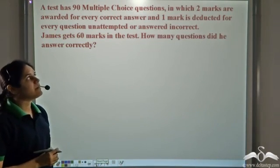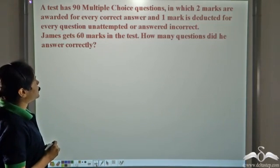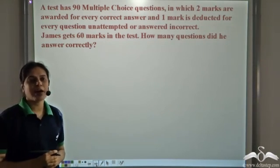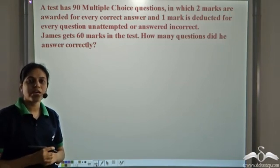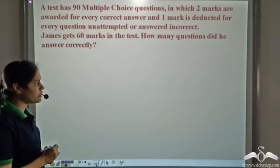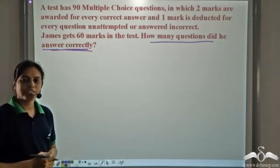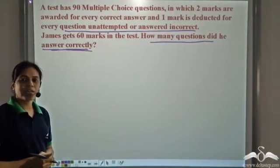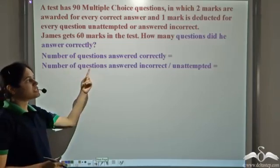Now a test has 90 multiple choice questions in which 2 marks are awarded for every correct answer and 1 mark is deducted for every question unattempted or answered incorrect. James gets 60 marks in the test. How many questions did he answer correctly? The unknowns are: the number of questions answered correctly, and the number of questions unattempted or answered incorrect.